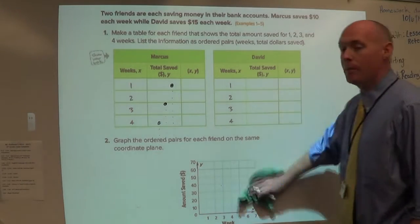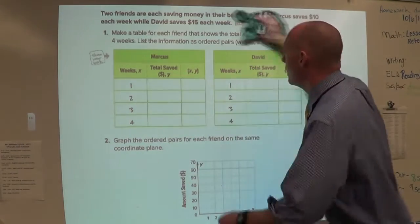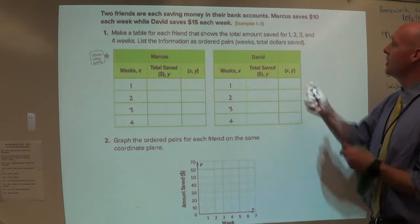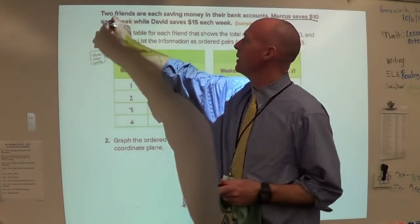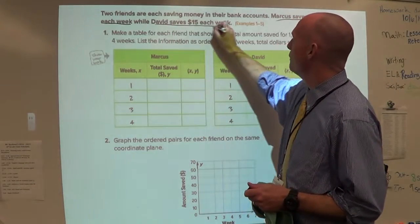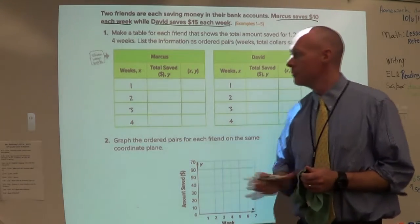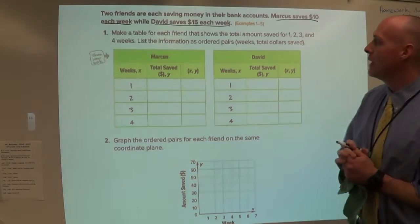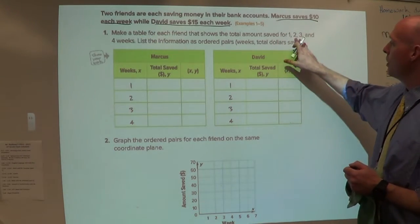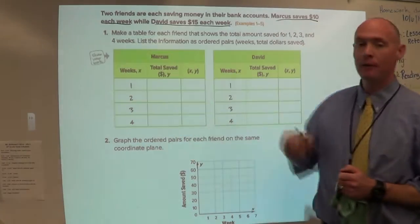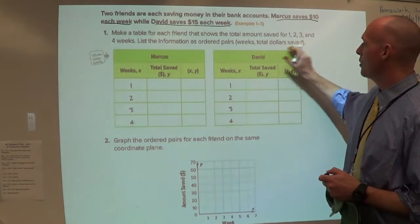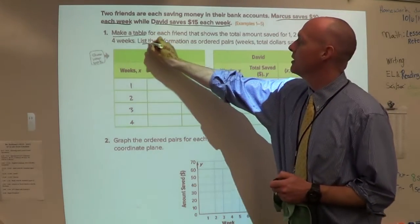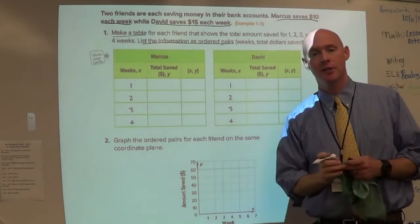All right, this one's a little bit more complicated. Two friends are each saving money in their bank accounts. Marcus saves $10 each week while David saves $15 each week. So we have two separate charts, one for Marcus, one for David. Make a table for each friend that shows the total amount saved for one, two, three, and four weeks. List the information as ordered pairs. So we have two things we have to do: make a table and then list the information as ordered pairs. Let's get started.